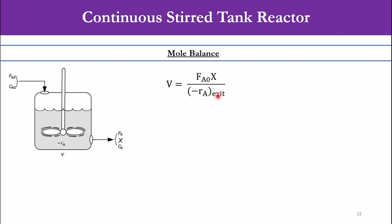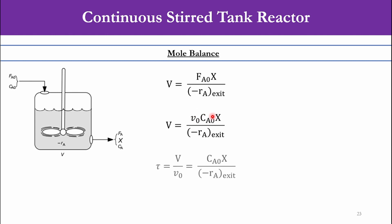We already developed that expression in chapter number 2, building block number 1. Alternatively, V equals V0·CA0·X over (−RA) at exit, since the molar flow rate equals volumetric flow rate times concentration. Taking V0 to the other side, V over V0 is tau — the space time — which we developed in chapter 2. So tau equals CA0·X over (−RA) at exit.